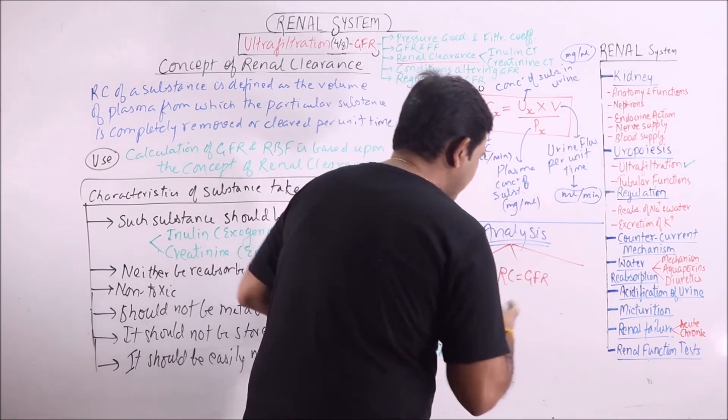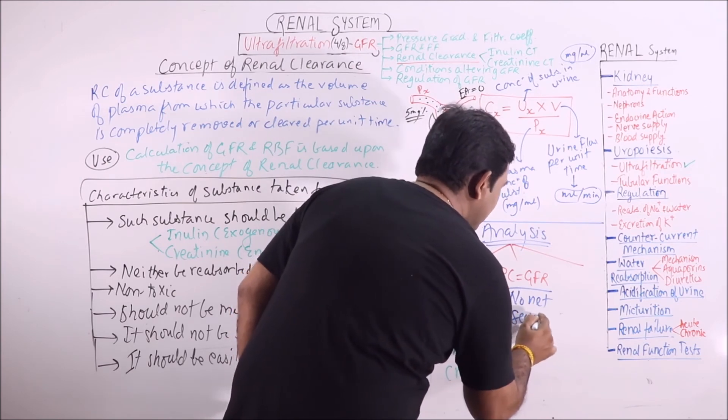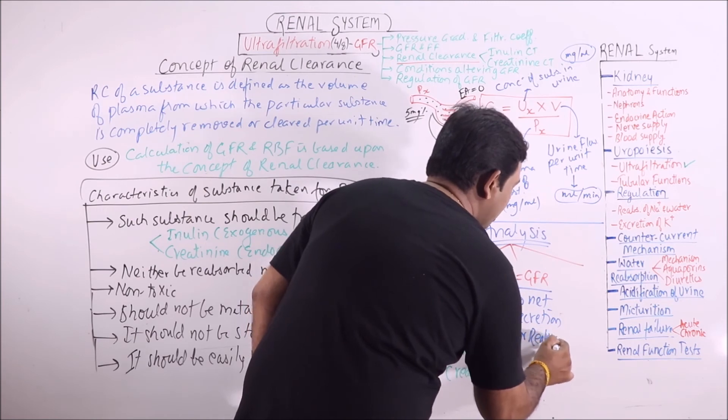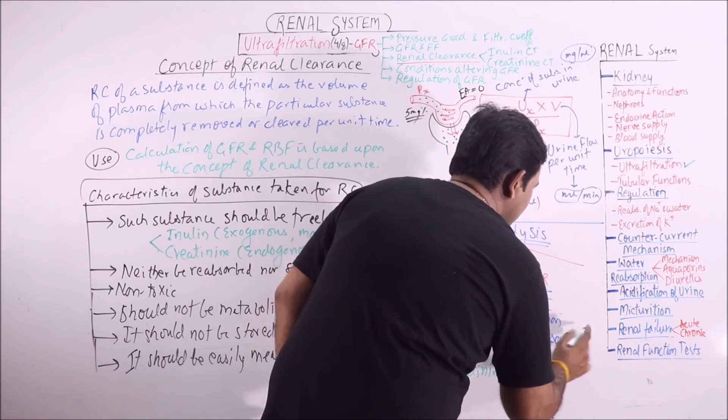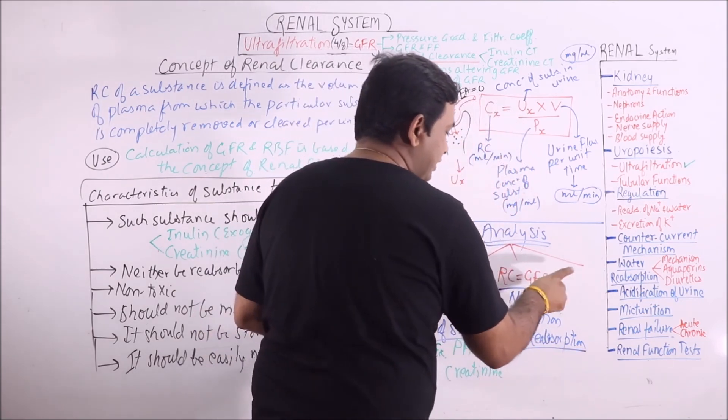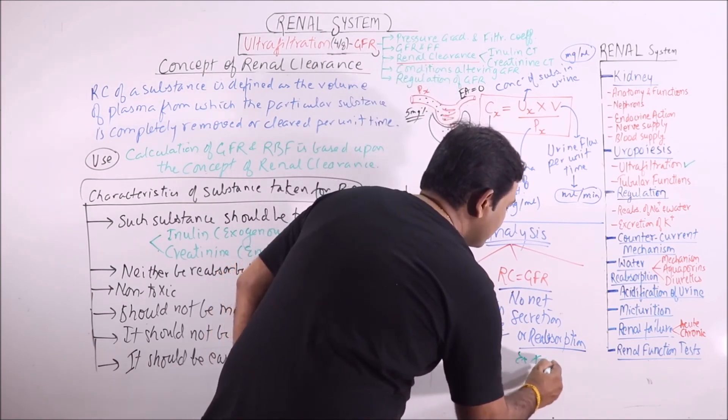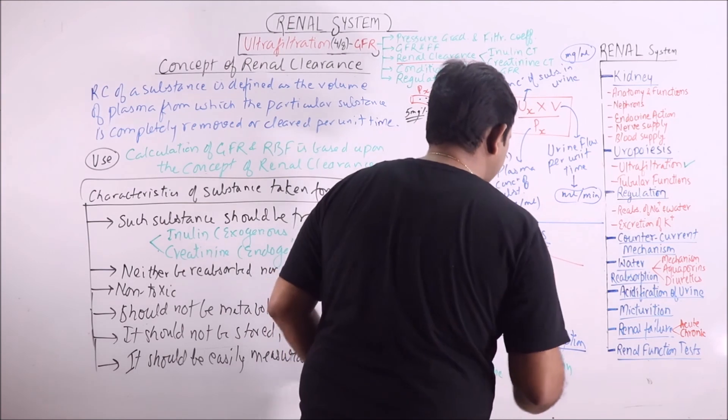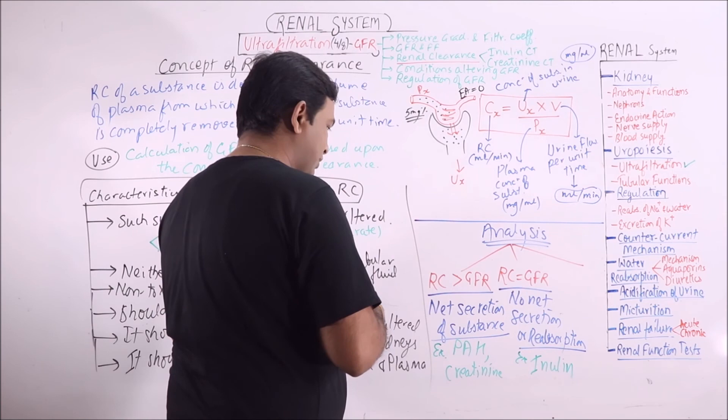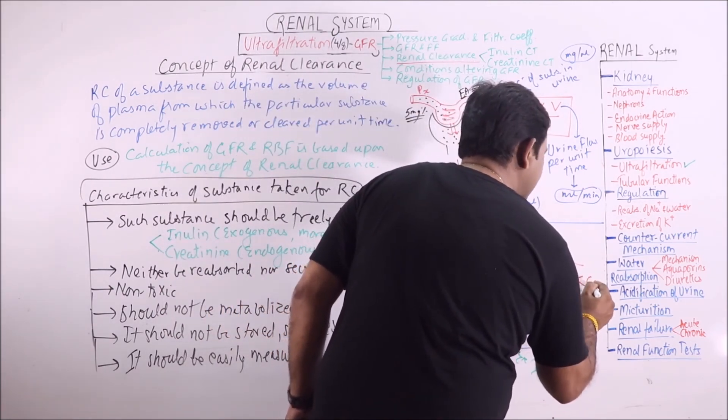If renal clearance is exactly equal to GFR, it means that no net tubular secretion or reabsorption. Whatever is filtered is excreted. That is why the renal clearance is equivalent to GFR and this comes in case of inulin. That is why it is considered to be more accurate for calculation of GFR.